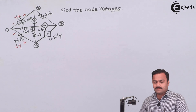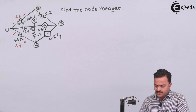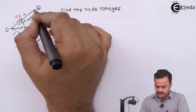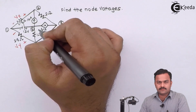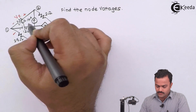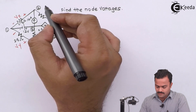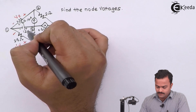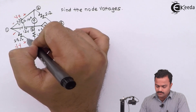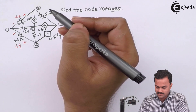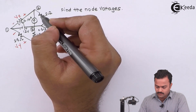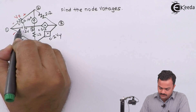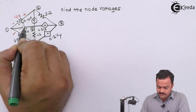Here is the problem. We are supposed to get the node voltages present in the circuit. There are several nodes marked and we have to get the potential of all the nodes. Now while solving, out of the five nodes, one has to be a reference. So we will take a reference point where the negative end of an independent voltage source is connected.